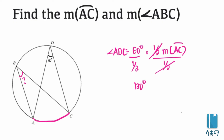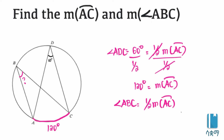Arc AC is 120 degrees. Angle ABC is also an inscribed angle intercepting arc AC, so angle ABC is equal to half of the measure of arc AC, which is half of 120 degrees.